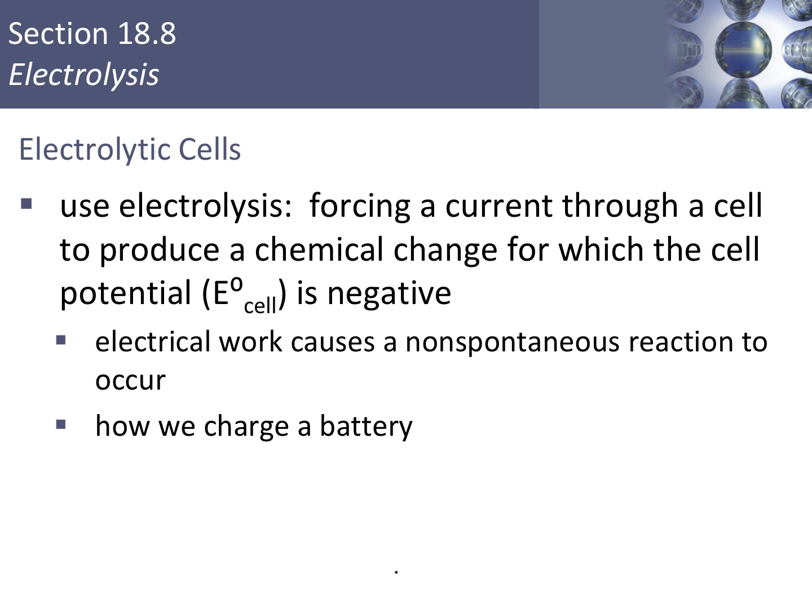Finally, in section 8, we're talking about electrolytic cells, which are the opposite of galvanic cells. Galvanic cells utilize spontaneous or thermodynamically favored redox reactions — a current is produced that can do work, with negative delta G and positive cell potential. For an electrolytic cell, we force a current through a cell to produce a chemical reaction with a negative cell potential — a non-spontaneous or non-thermodynamically-favored reaction. We call this process electrolysis.